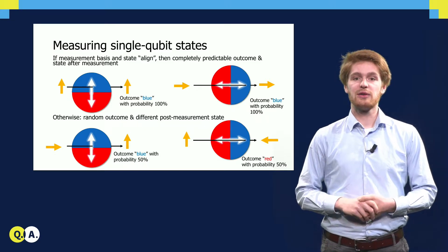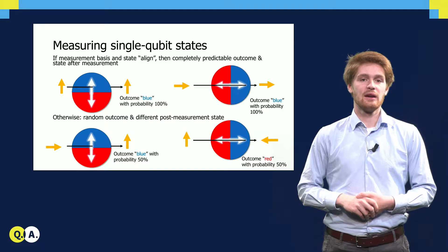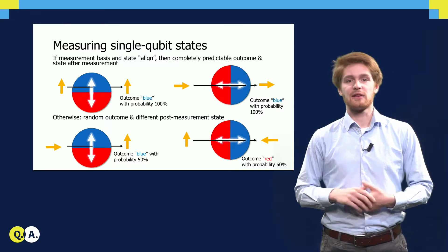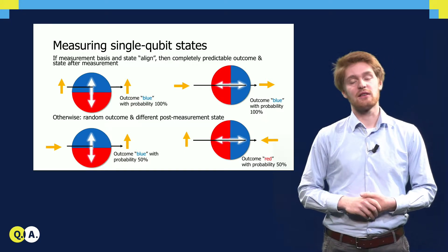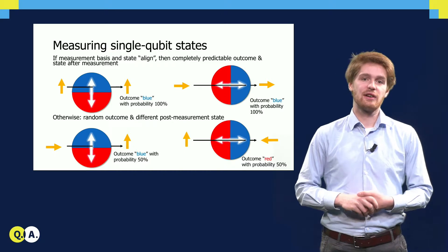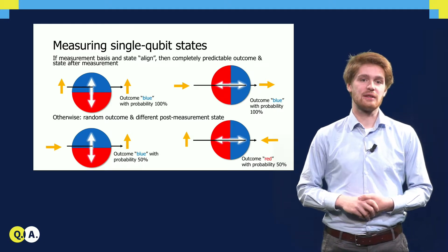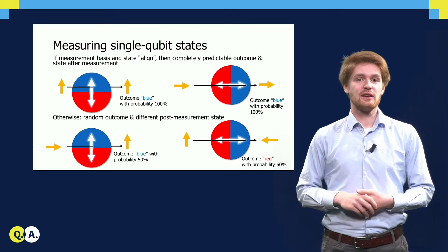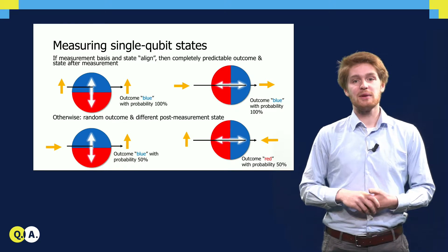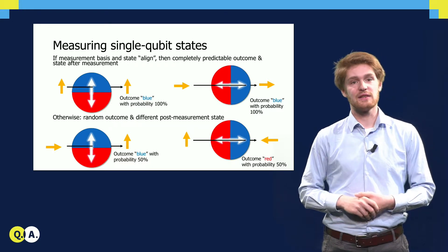This situation is depicted in the upper two examples. In the left one, we measure a horizontal state in a horizontal basis. The arrow passes through the slit unharmed, and the outcome is blue since the arrow points upward. A similar explanation can be given for the picture in the upper right corner. When the measurement basis and the qubit state do not align, the situation is very different. In the lower left example, the horizontal state is measured in a vertical measurement basis. The state then flips to the vertical direction, either up or down, each with a probability of 50%. The measurement outcome is precisely related to the direction of the arrow after the flip — blue if the state flipped to up, and red if the state flipped to down.